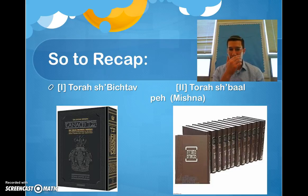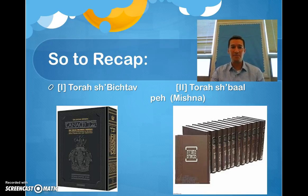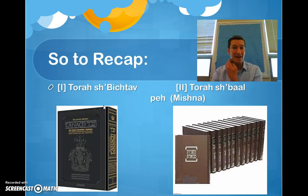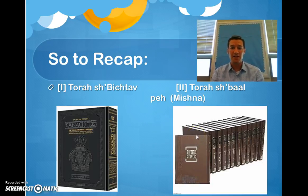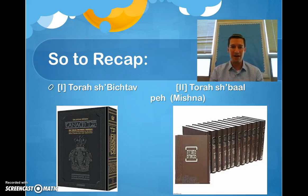To recap: Torah Shebichtav and the word Tanakh are synonyms. The written Torah is made up of Torah, Nevim, and Ketuvim. Then we had the Torah Shebel Peh, which was not allowed to be written down for a considerable amount of time until the year 200 CE. The Torah Shebel Peh was written down first as the Mishnah — the six Sidre Mishnah, the six orders of the Mishnah, broken into Masechtot, Prakim, and Mishnayot.